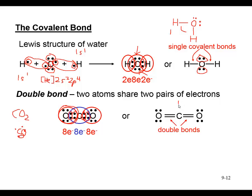In CO₂, we show double bonds as double lines between the oxygens and carbon. Counting electrons for the carbon: two per line gives one, two, three, four, five, six, seven, eight — a full octet. Each oxygen also counts two per line for the double bond plus lone pairs to reach eight electrons. So every atom in CO₂ satisfies the octet rule.